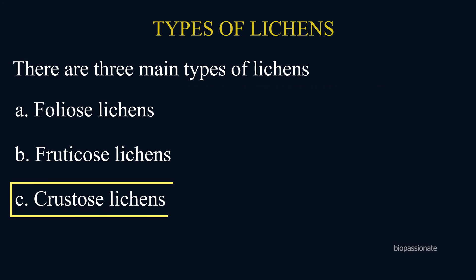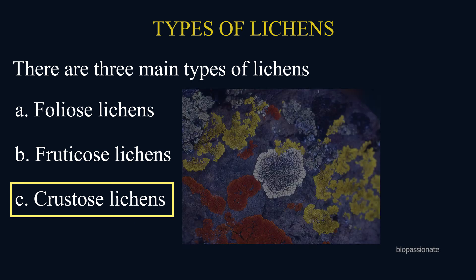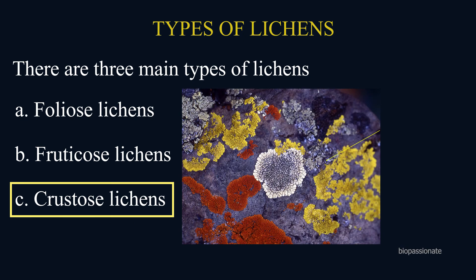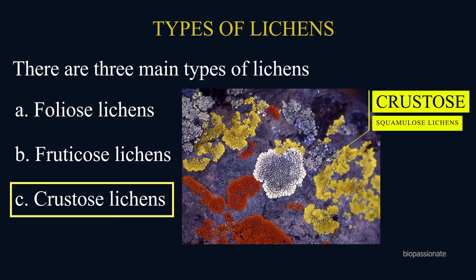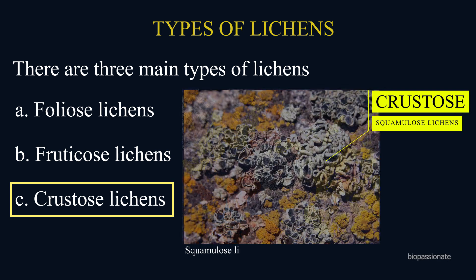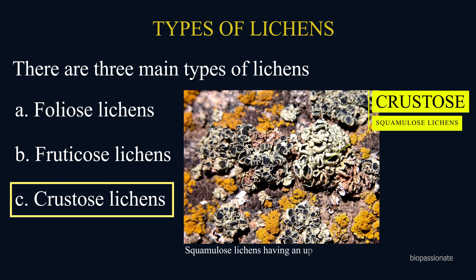Crustose lichens are called squamous lichens because of their flattened thalli. Squamous lichens have an upper cortex but do not have a lower cortex.